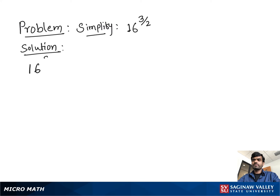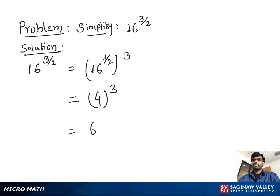Simplify 16 raised to the 3/2 power. First, find the square root of 16, then raise to the third power. The square root of 16 is 4, because 4 times 4 is 16. Then 4 raised to the third power gives our final answer, which is 64.